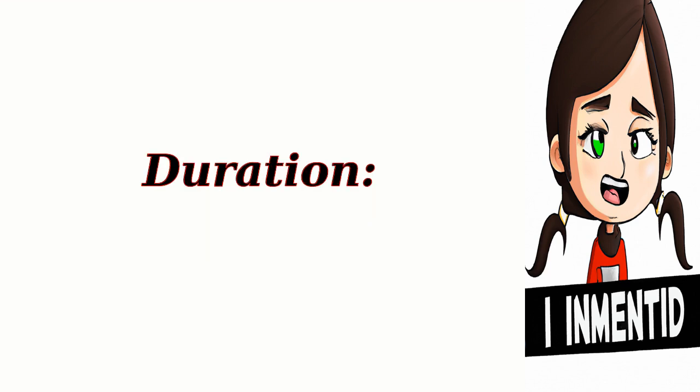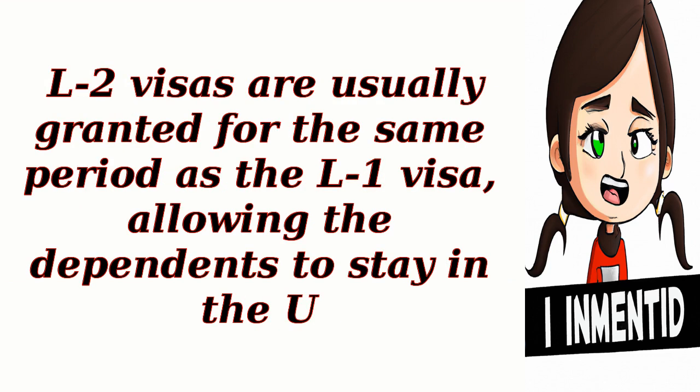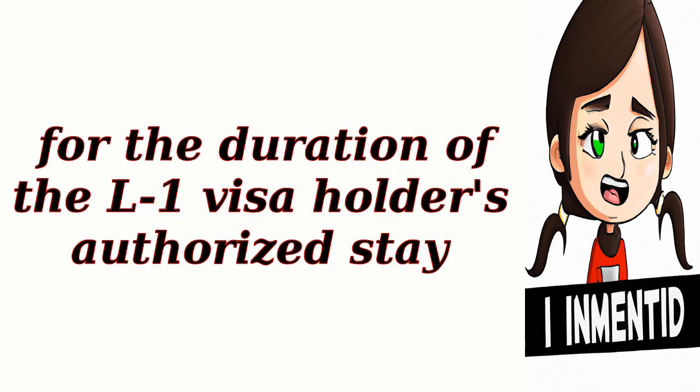Duration: The duration of the L-2 dependent visa is typically tied to the validity of the L-1 visa held by the primary visa holder. L-2 visas are usually granted for the same period as the L-1 visa, allowing the dependents to stay in the U.S. for the duration of the L-1 visa holder's authorized stay.